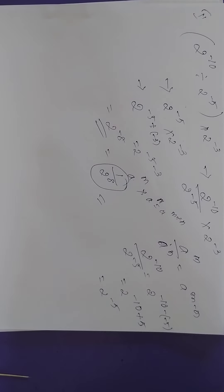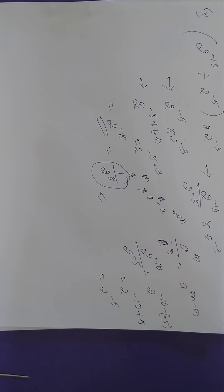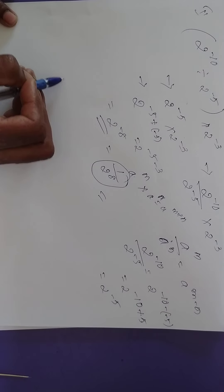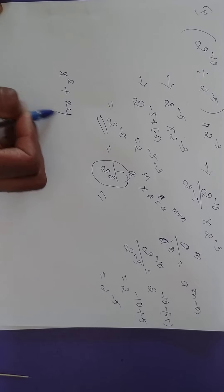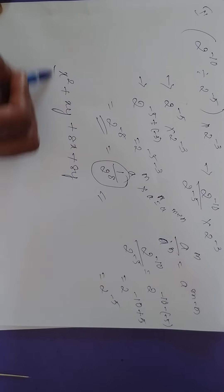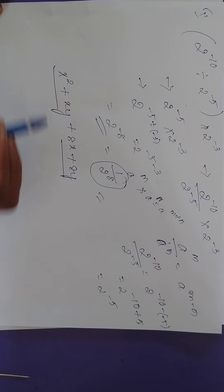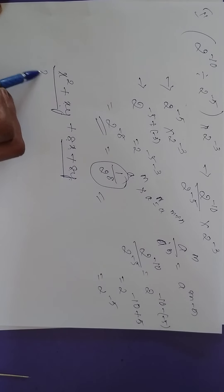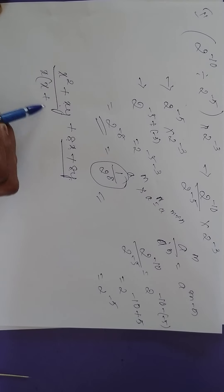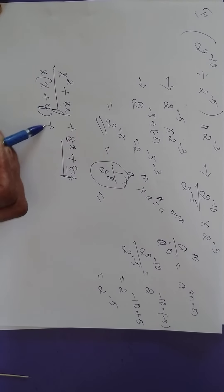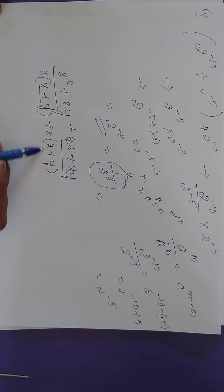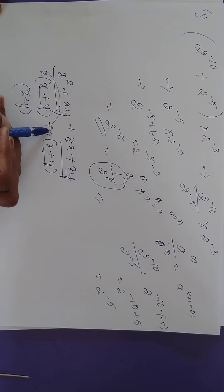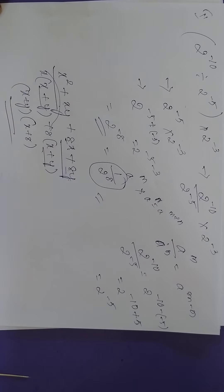Next, factorization. For example, x squared plus xy plus 8x plus 8y. Group the terms: x squared and xy in one group, 8x and 8y in another. From the first group, take x as common — what is left is x plus y. From the second group, 8 is common — what is left is also x plus y. So x plus y is the common factor, giving x plus y into x plus 8.